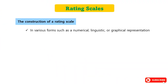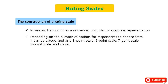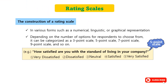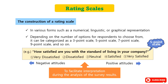The construction of a rating scale can be presented in various forms, such as numerical, linguistic, or graphical representation. Depending on the number of options, it can be categorized as a three-point scale, five-point scale, seven-point scale, nine-point scale, and so on. Usually, survey answers are listed in order from 1 to 5, where lower numbers represent negative attitudes and higher numbers indicate positive attitudes. This design facilitates interpretation during the analysis of survey results. As such, rating scales are also classified as ordinal scales, in the sense that they are used for grading.